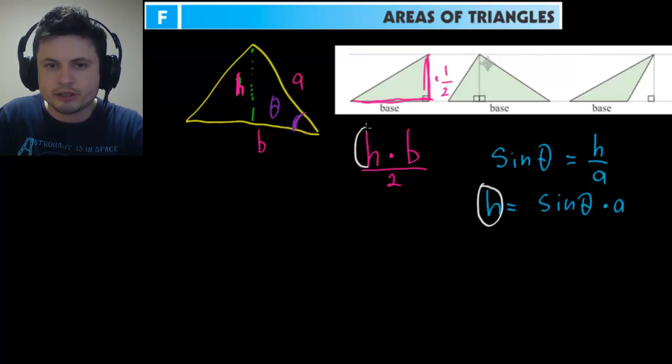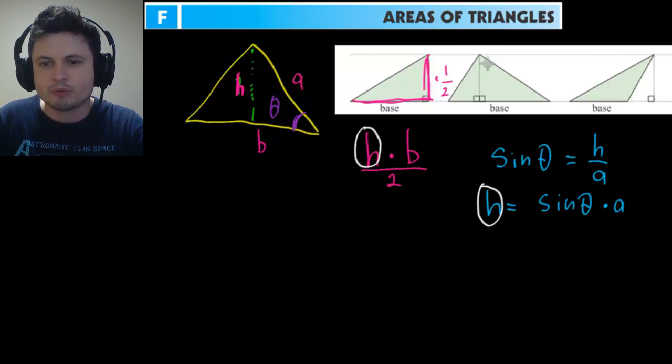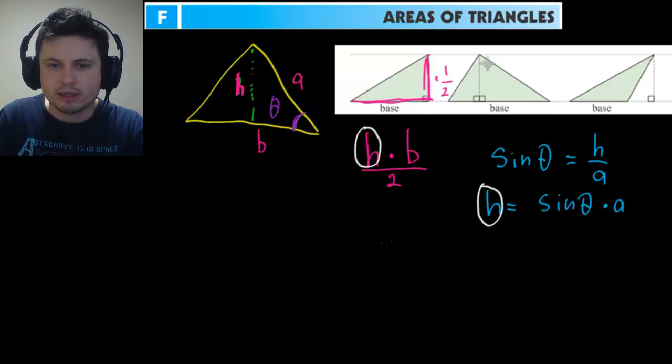So even though we don't actually have h, we don't need it because we have angle theta and we also have the side called a. So rewriting all this, what we get is the following: we get area of this triangle equals b, which is the base, times a times sine of theta.